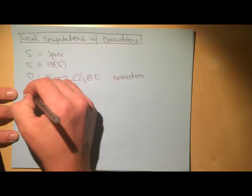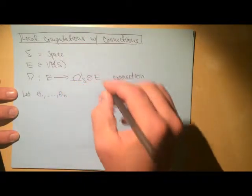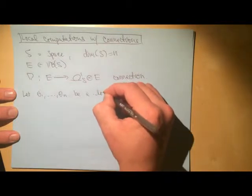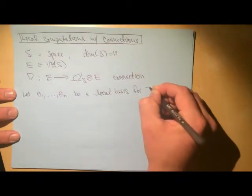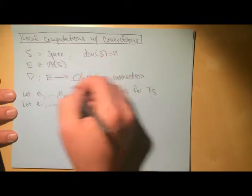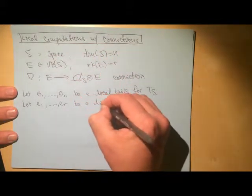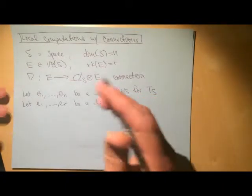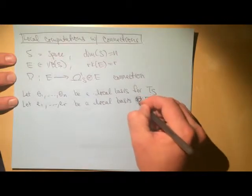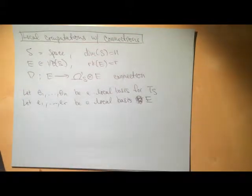So locally, we're going to pick some point and some neighborhood. And so we're going to let theta 1 through theta of N, let's say here the dimension of S is going to be N, be a local basis for the tangent bundle of S. And we're going to let E1 to ER, so we're going to have a rank R, so the rank of the vector bundle is going to be R, be a local basis, the same locally, I mean like the same open set, a local basis for E.